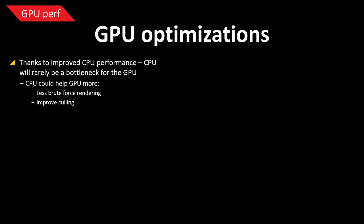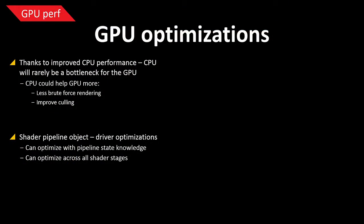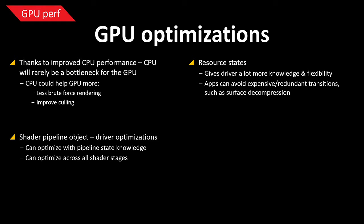Thanks to all the CPU performance improvements, the CPU with Mantle should never really be a bottleneck for the GPU anymore. You can use the CPU to help the GPU more, do less brute-force rendering, improve culling, or spend excess CPU time on the overall game. Monolithic shader pipelines also give the driver more opportunity to optimize, enabling cross-stage optimizations. Resource states become explicit, making transition costs visible and easier to track and optimize.